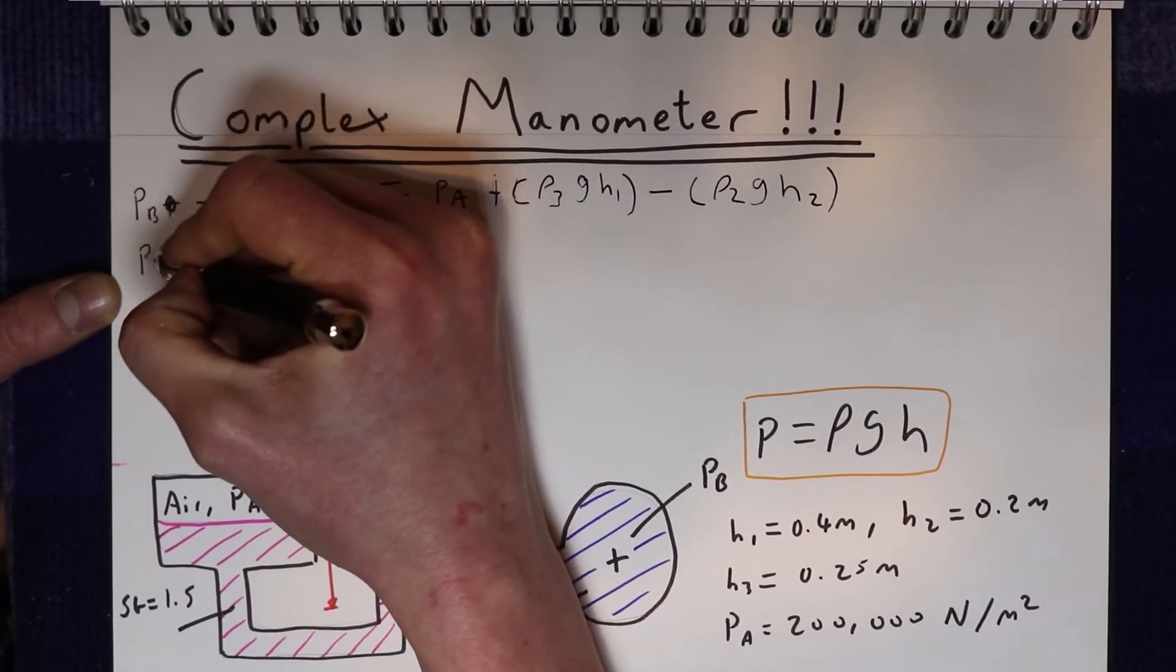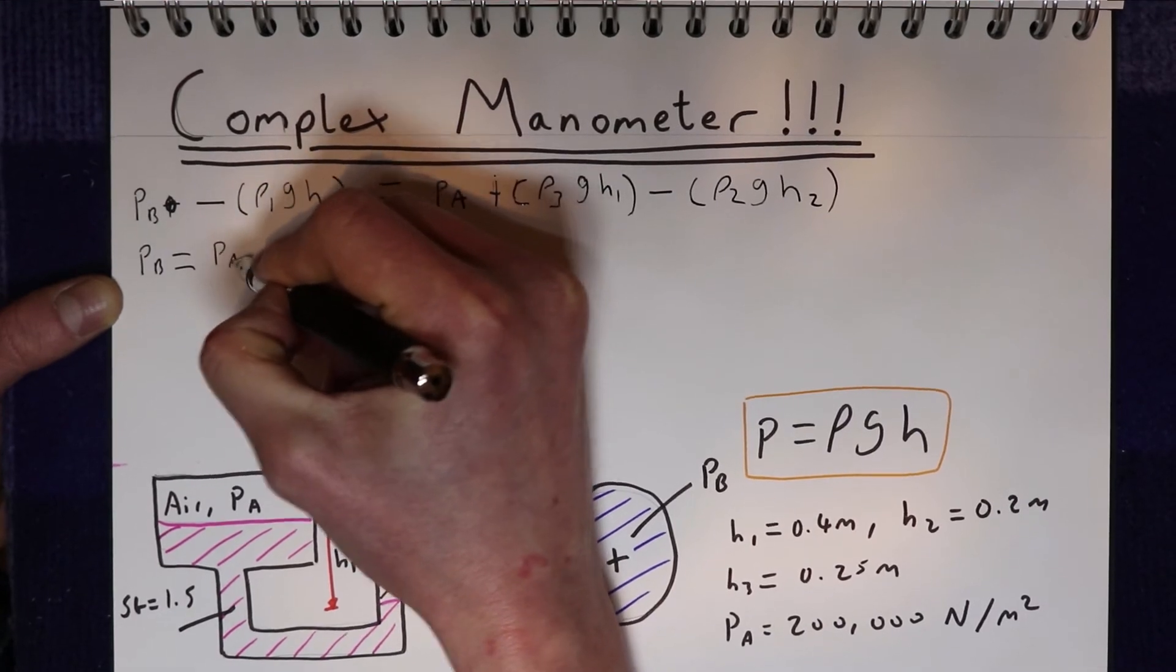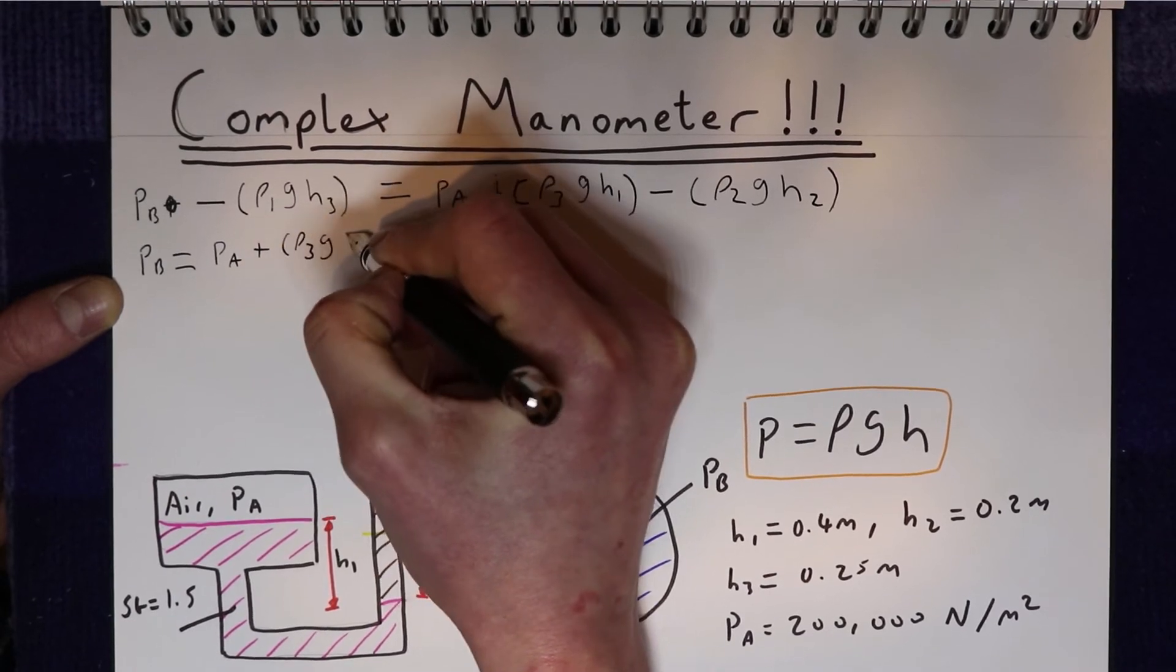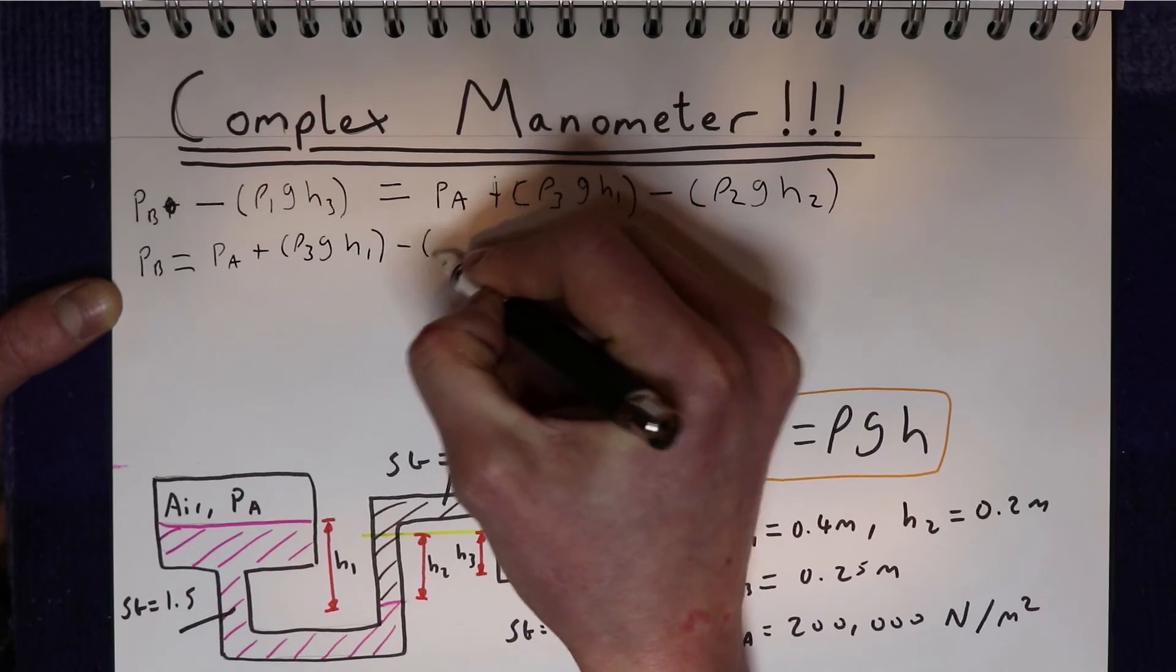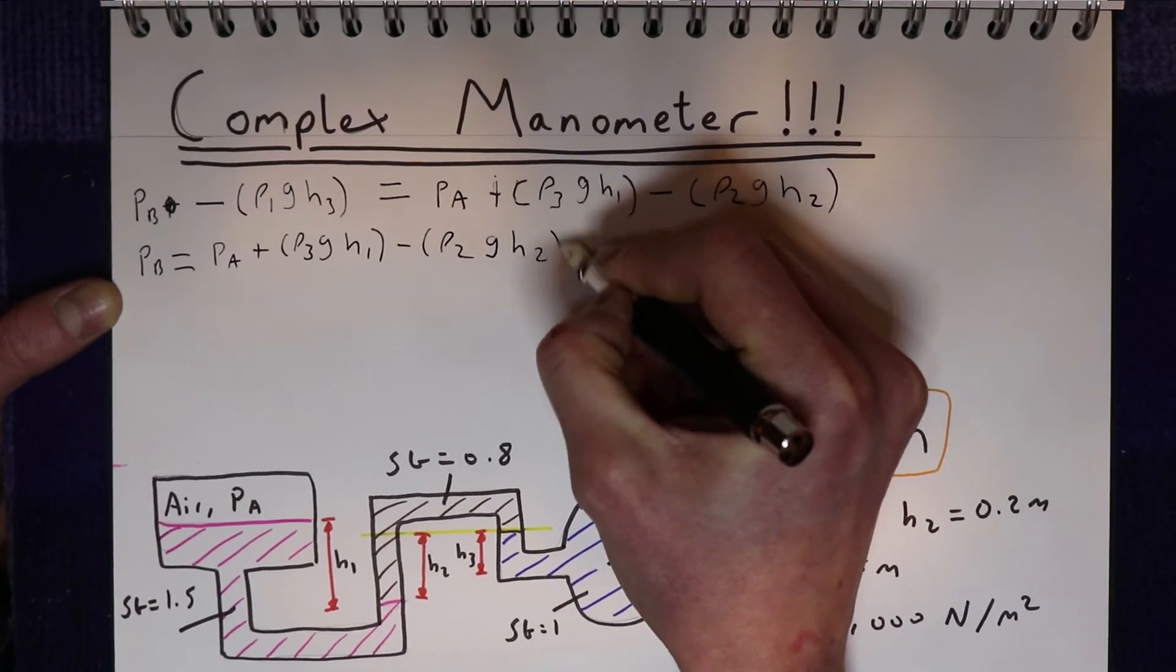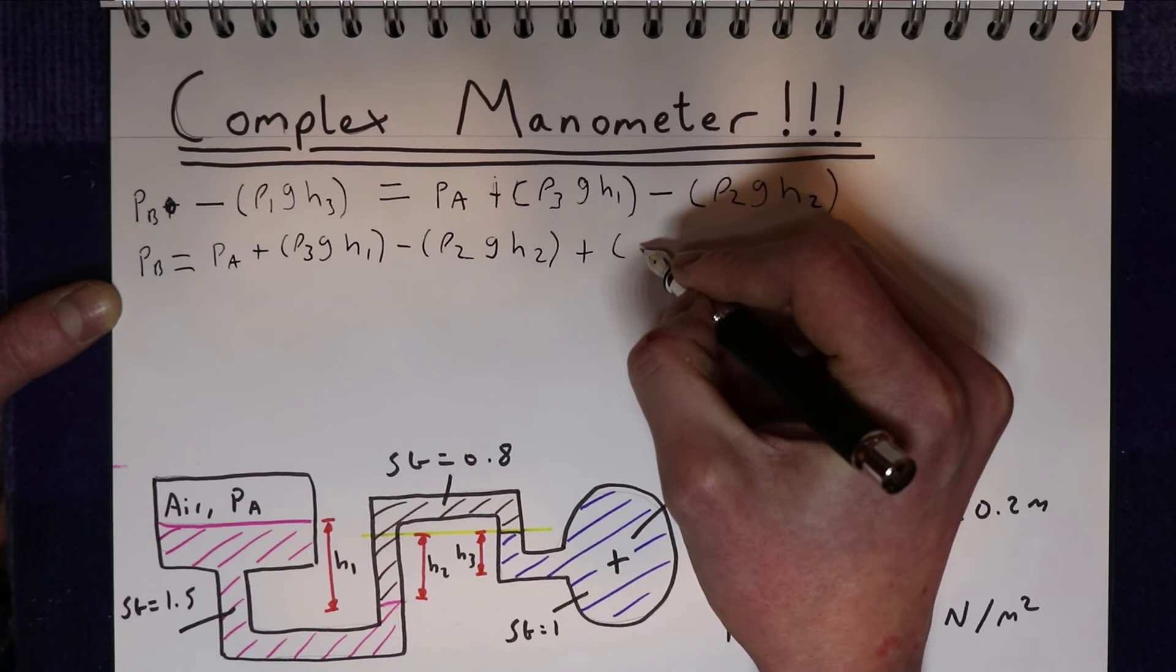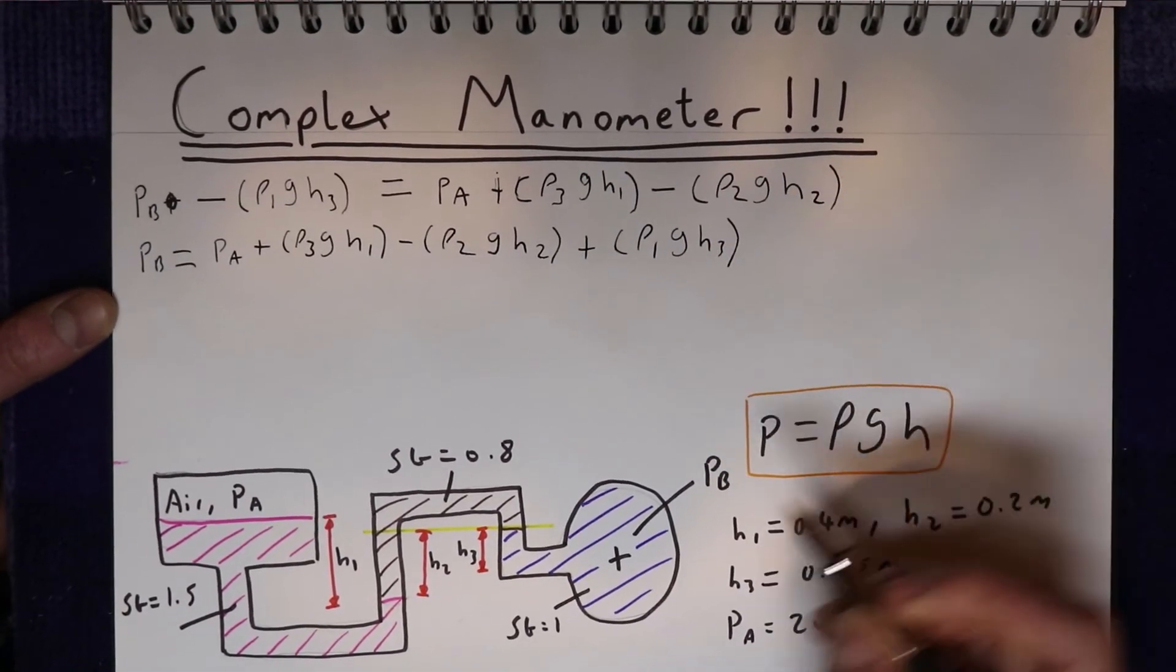So PB equals everything on this side, so PA plus density 3 times gravity times h1, minus density 2 times gravity times h2. And then we're going to move these terms over to the other side, so plus density 1 times gravity times h3.